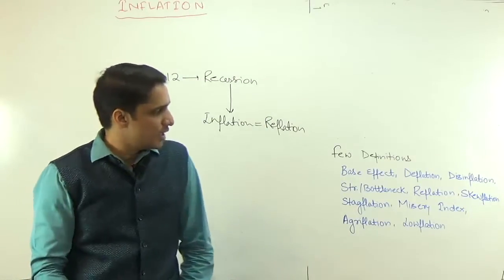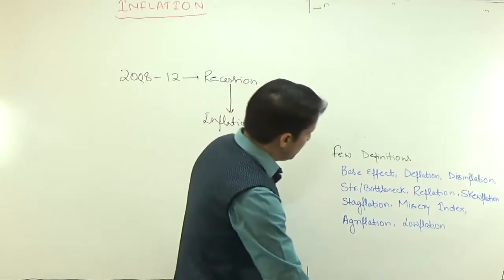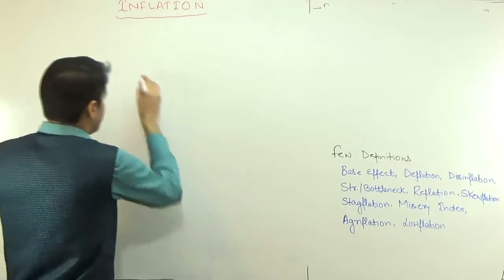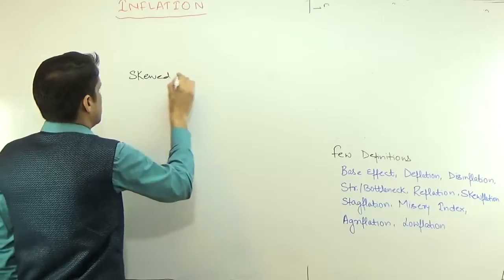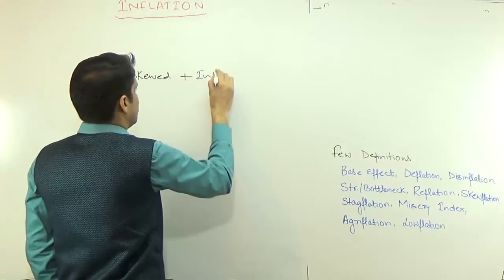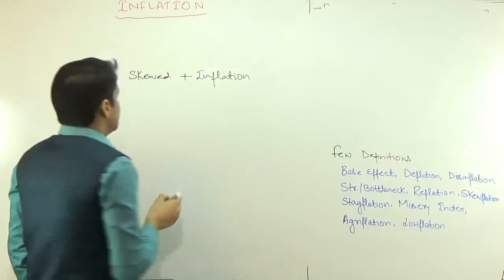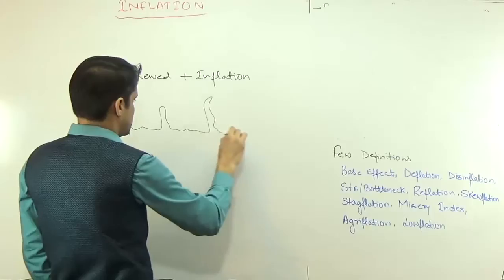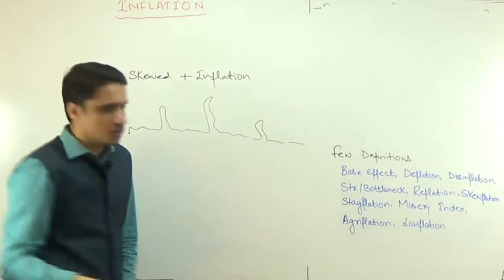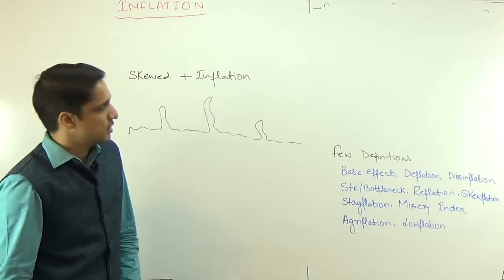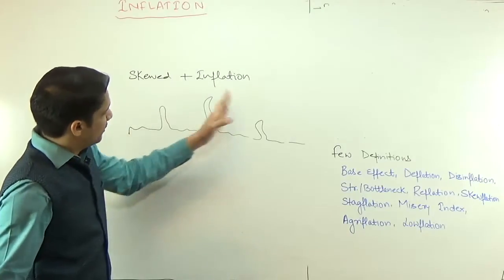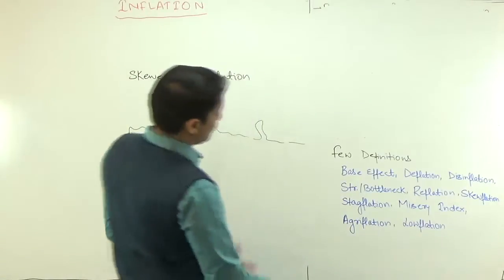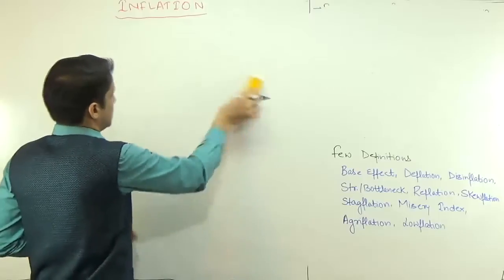Then we have skewflation or skewed inflation — skewed plus inflation. It means the prices of only a few commodities have increased drastically, but the prices of other commodities are not that high. Only prices of few goods and services have increased drastically, while the majority of other goods and services have not seen that high a price increase. That is known as skewflation.